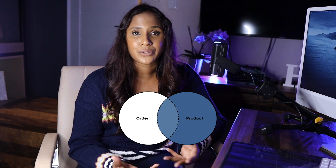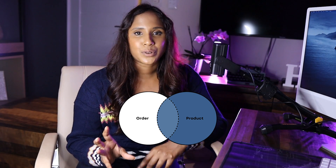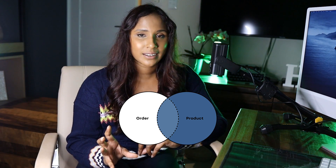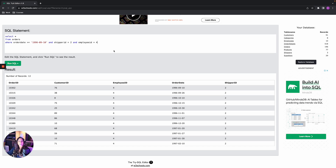The RIGHT JOIN is the reverse of the LEFT JOIN — it selects all data from the right table and only brings in corresponding data that matches the key in the left table. So P6 from the product table appears even if it has no matching order, but its order data will be NULL. P4 and P5 in the orders table but not the product table won't appear.